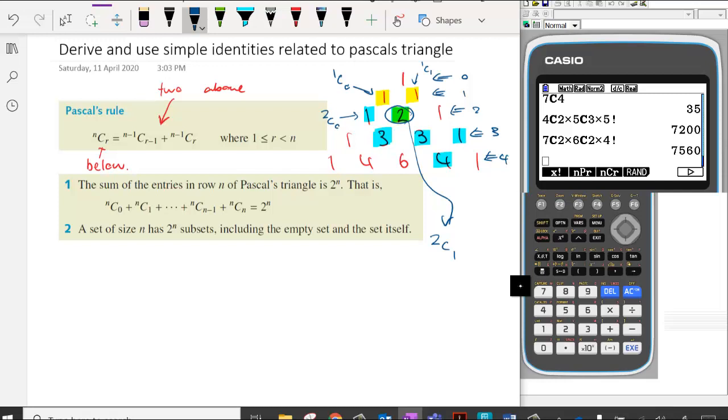And if we follow that rule, what we're saying is that 2C1 will be equal to, if we take one off, so now it's one in each. So we've got 1C something and 1C something. We're taking one away, so it's 1C0 and 1C1. So we can see that's true. We're saying that the sum of those two give us that 2C1.